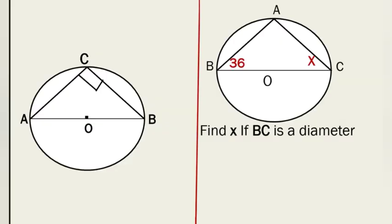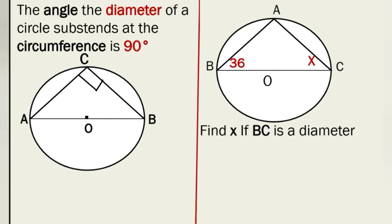Rule number 3 states that the angle a diameter of a circle subtends at the circumference is 90 degrees. The diameter is the longest chord in a circle, which passes through the center. In our diagram the diameter is AB, passing through the center, and the angle subtended at C is 90 degrees. This rule is an extension of the previous rule — a straight line has an angle of 180 degrees, so dividing by 2 gives the angle at the edge as 90 degrees. That's why this rule exists.